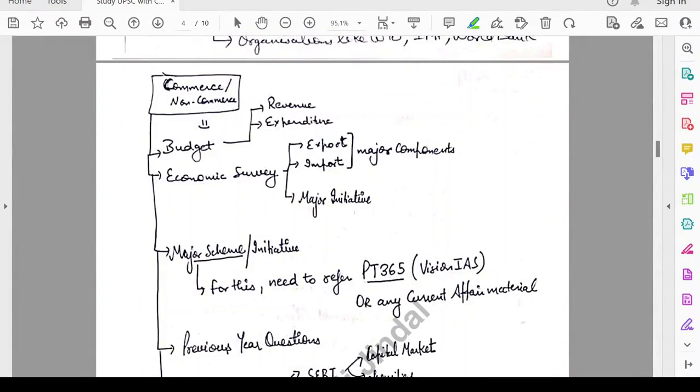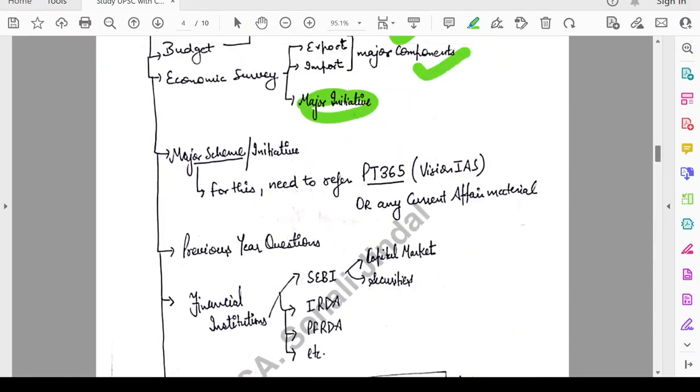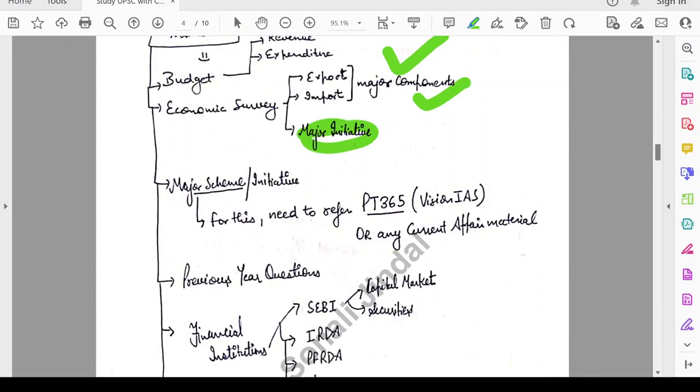Then you need to cover budget and economic survey. In budget, you need to put focus on what is the major component or source of revenue and major expenditure of government. And then in economic survey, you need to see major components of import and export. And if any major initiatives taken by the government in that year. And for major schemes or initiatives, you can refer PT365 of Vision IAS or any other current affair material.